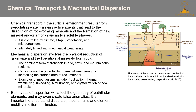The next important considerations are whether the area you're exploring has been subjected to chemical transport or mechanical dispersion. Chemical transport in the surficial environment results from percolating water carrying active agents that lead to dissolution of rock-forming minerals and the formation of new minerals or amorphous/soluble phases, controlled by climate, EH/pH, vegetation, and microorganisms. Mechanical dispersion involves the physical reduction of grain size and the liberation of minerals from rock. It dominates transport in arid, arctic, and mountainous regions, but can increase the potential for chemical weathering by increasing the surface area of rock material. Examples include frost action and thermal weathering. Both types of dispersion will affect the geometry of pathfinder elements and may even create false anomalies.